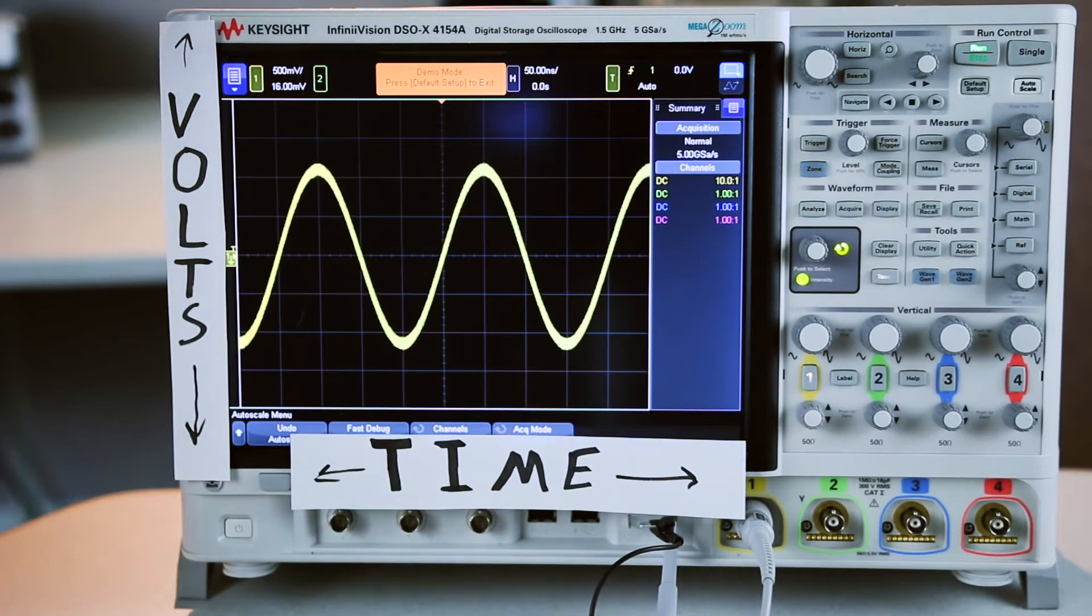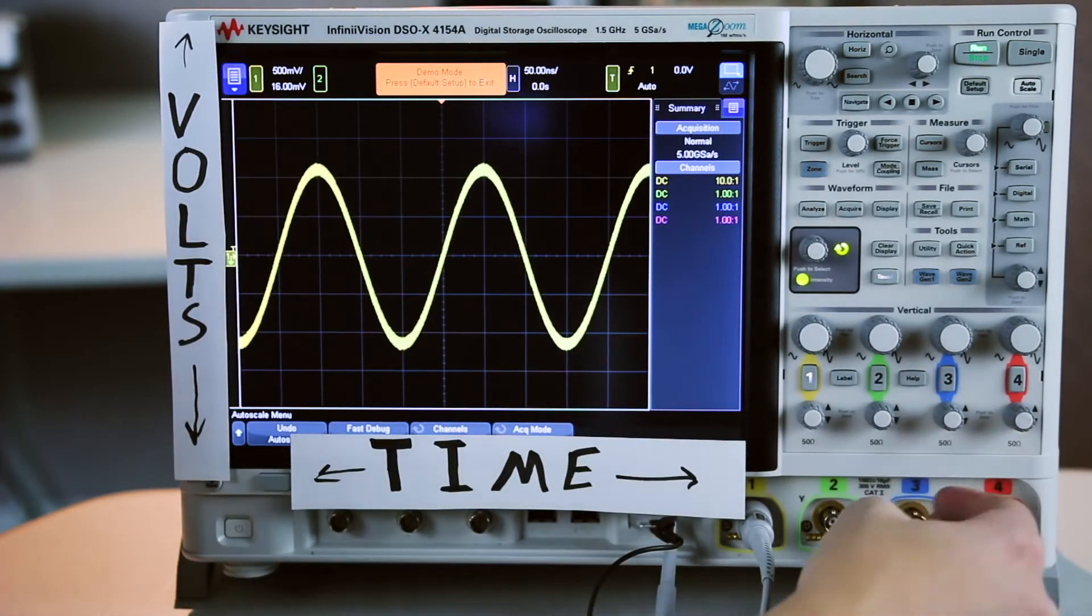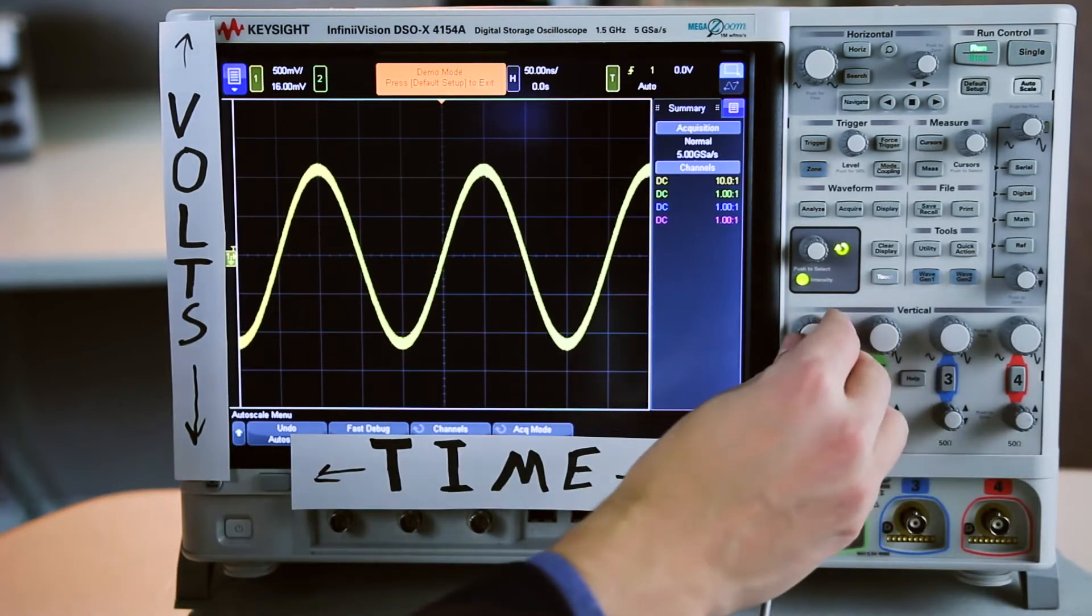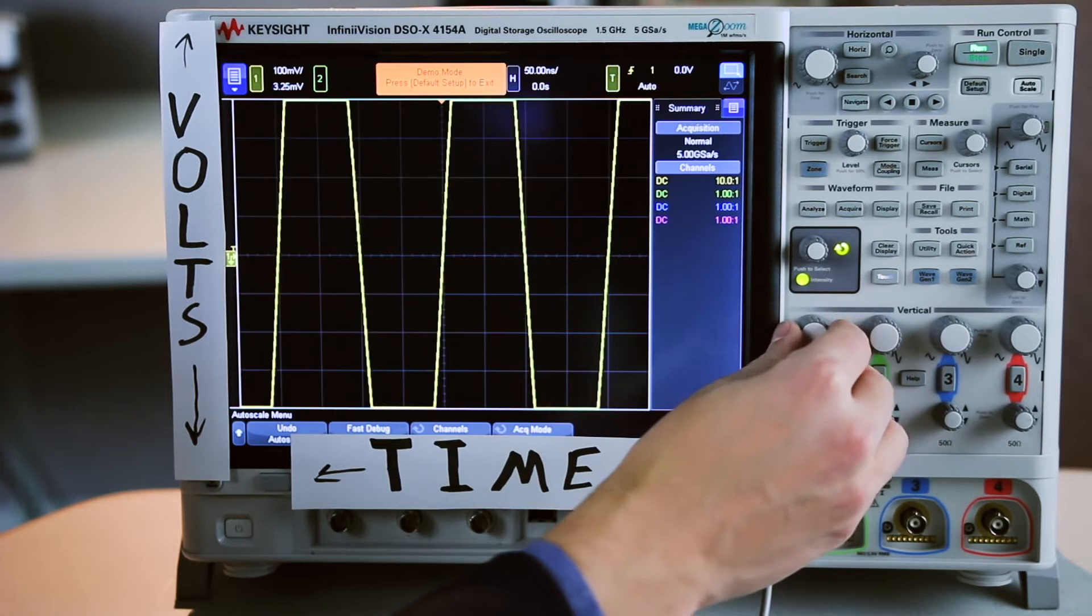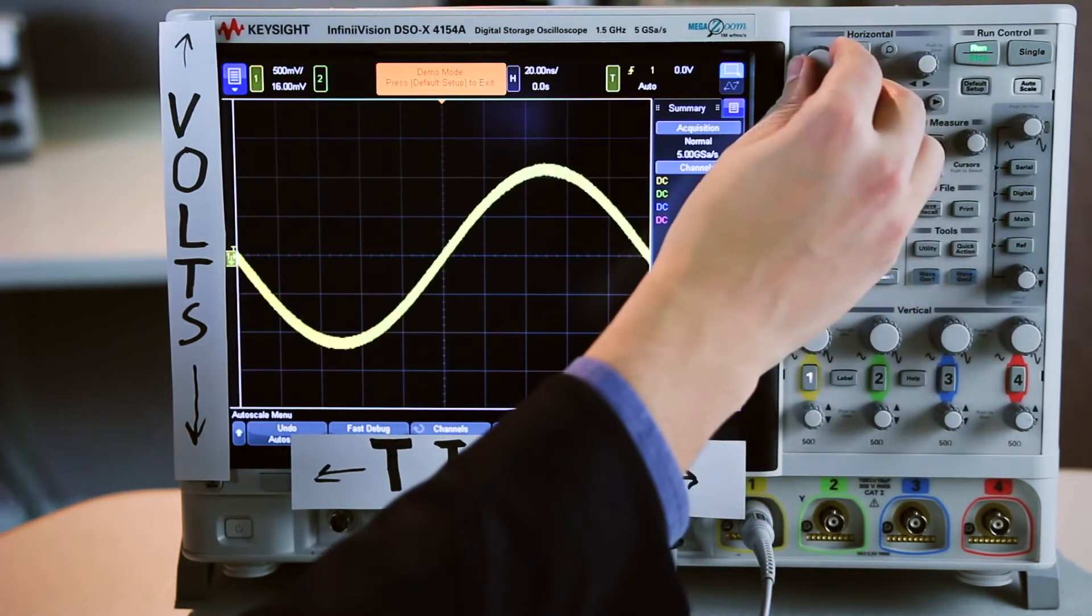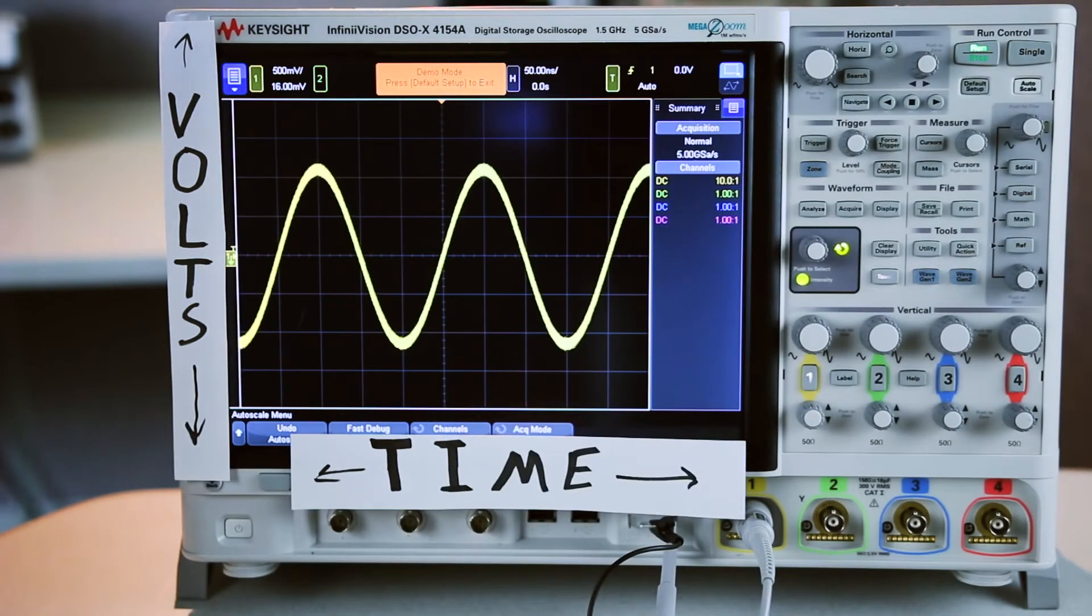With this waveform on screen I now want to be able to manipulate my signal. So I have a set of knobs here that's going to correspond to each of the four channels. You can see when I turn this knob I'm going to zoom in or zoom out vertically on my signal. When I turn this knob and zoom in or zoom out over time. I can then use these knobs to see exactly which portions of the signal I want.